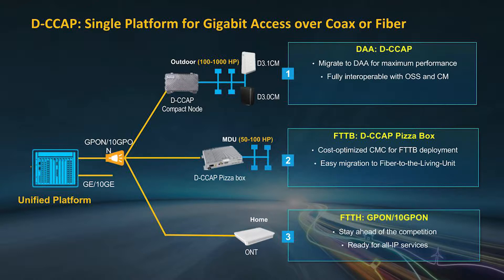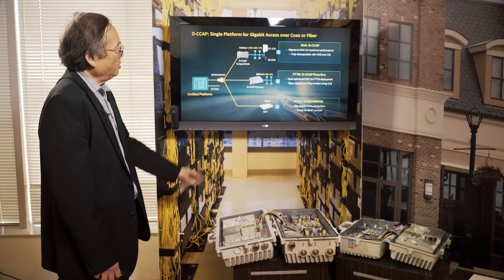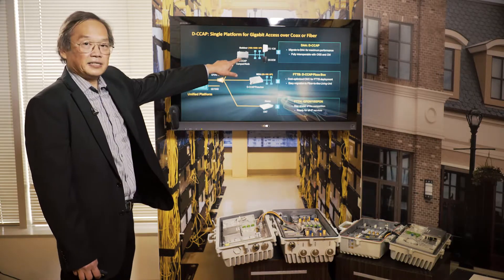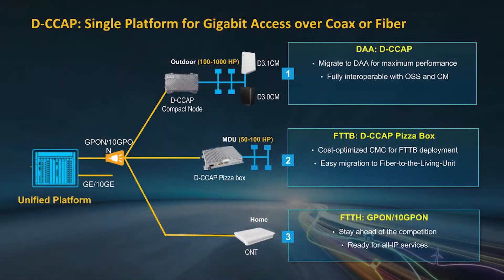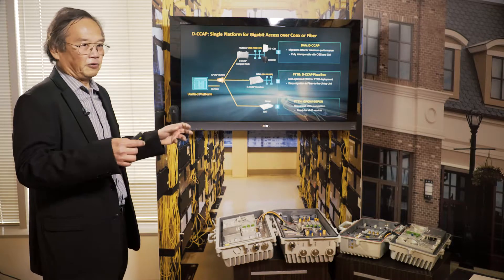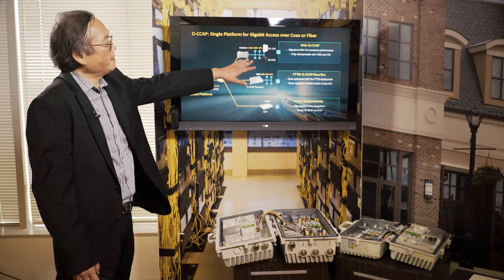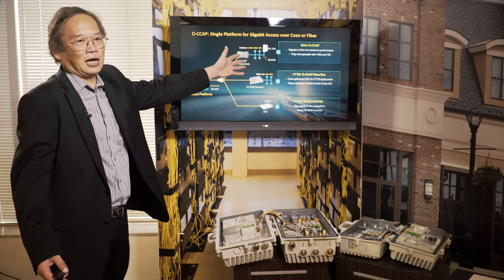So here we see two form factors. The top one here is designed for HFC migration — that box is designed to replace an existing fiber node. It can support anywhere from 100 to 1,000 homes passed, depending on the size of the service group. As HFC does further node splits, the service group is going to reduce gradually toward less than 100 homes passed.